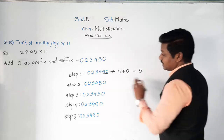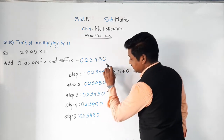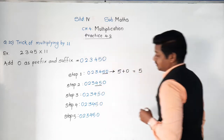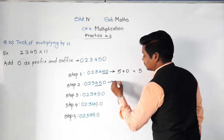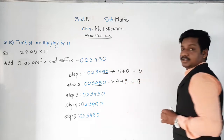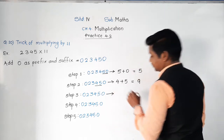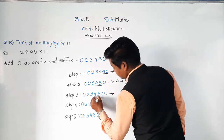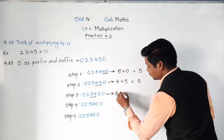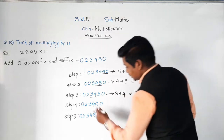Now move to the second and third digits from the right: underline 4 and 5, and add them. Four plus five equals nine. Then move to the third and fourth digits: underline 3 and 4, and add them. Three plus four equals seven.